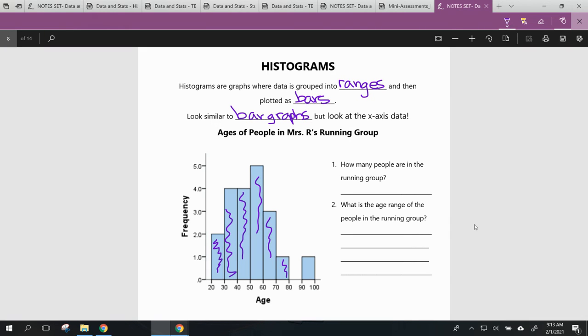There's no one in their 80s, and then all the way up from there. So when we talk about grouping our data into ranges, we don't have specific data, we just have a range of data.